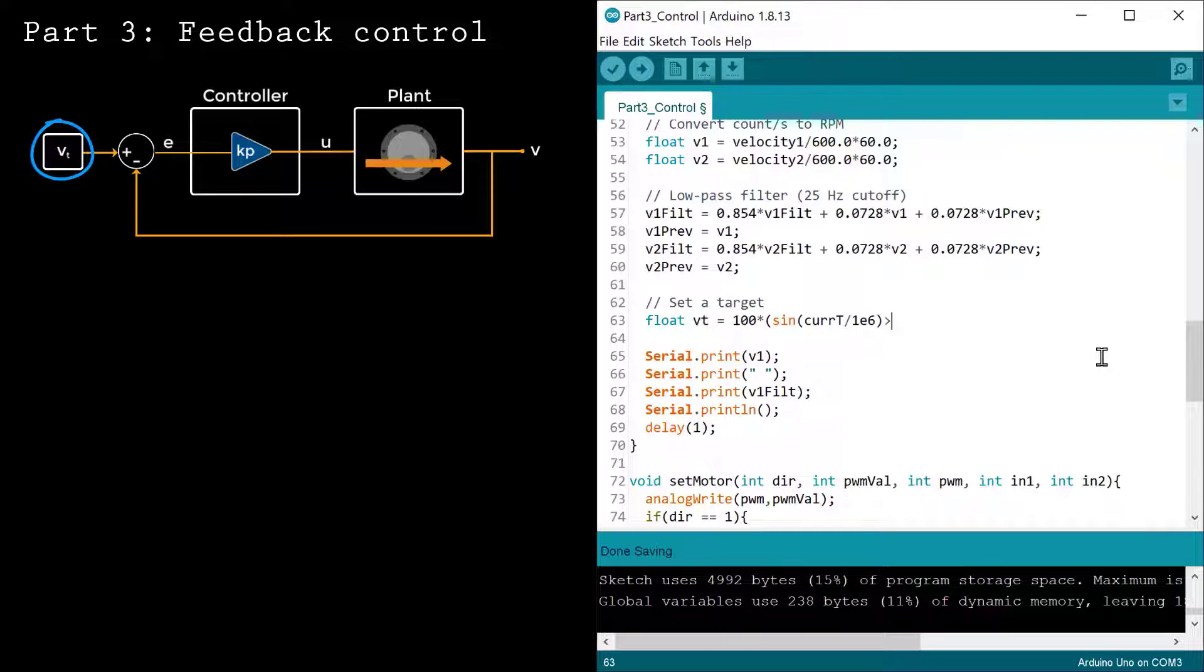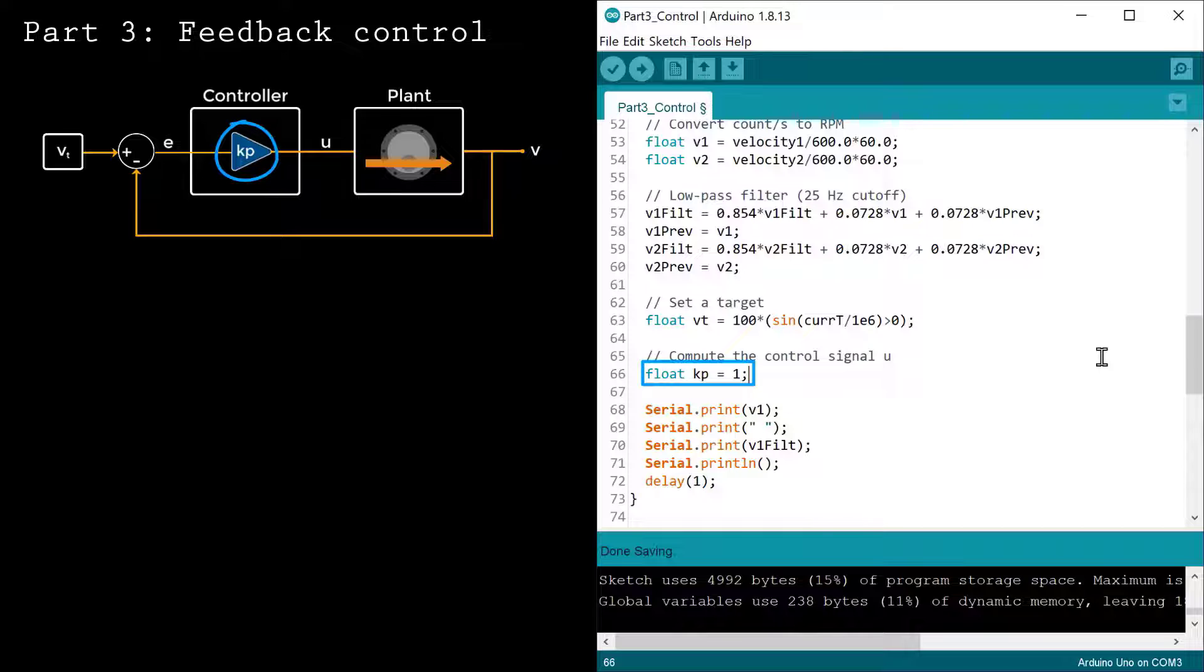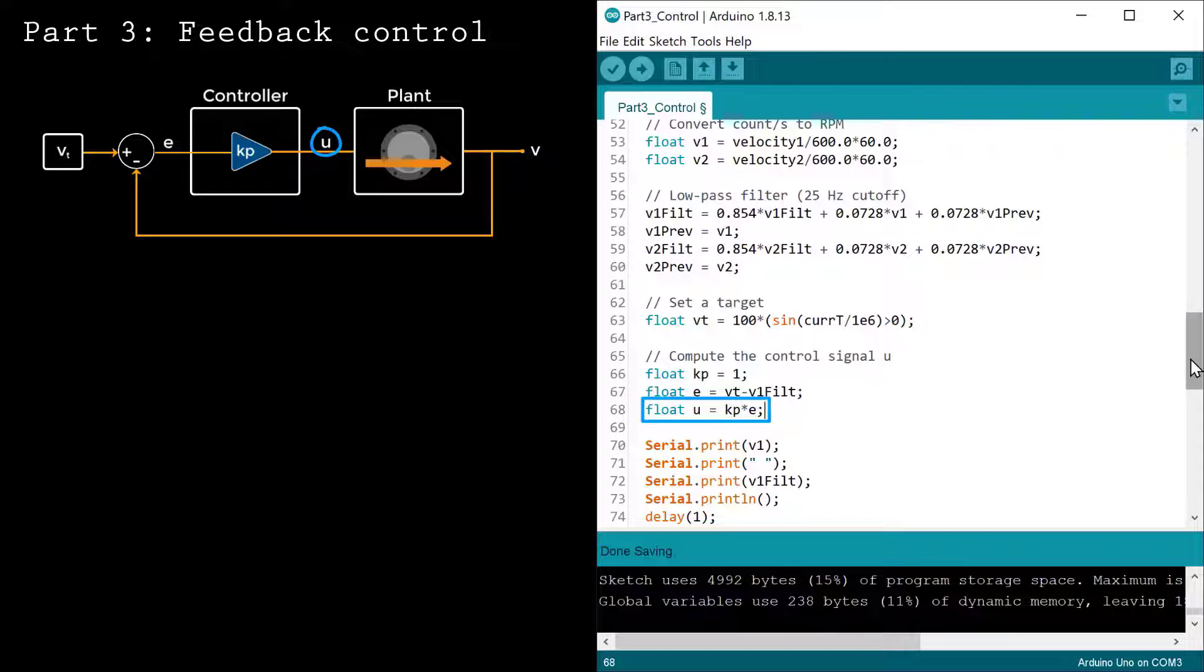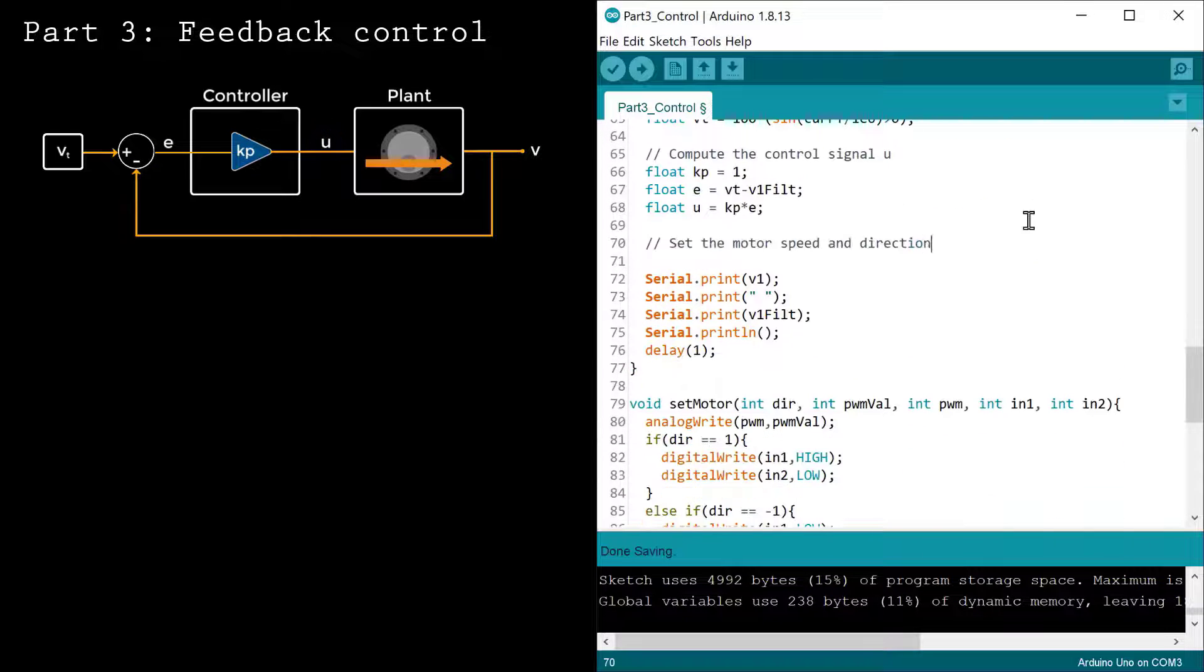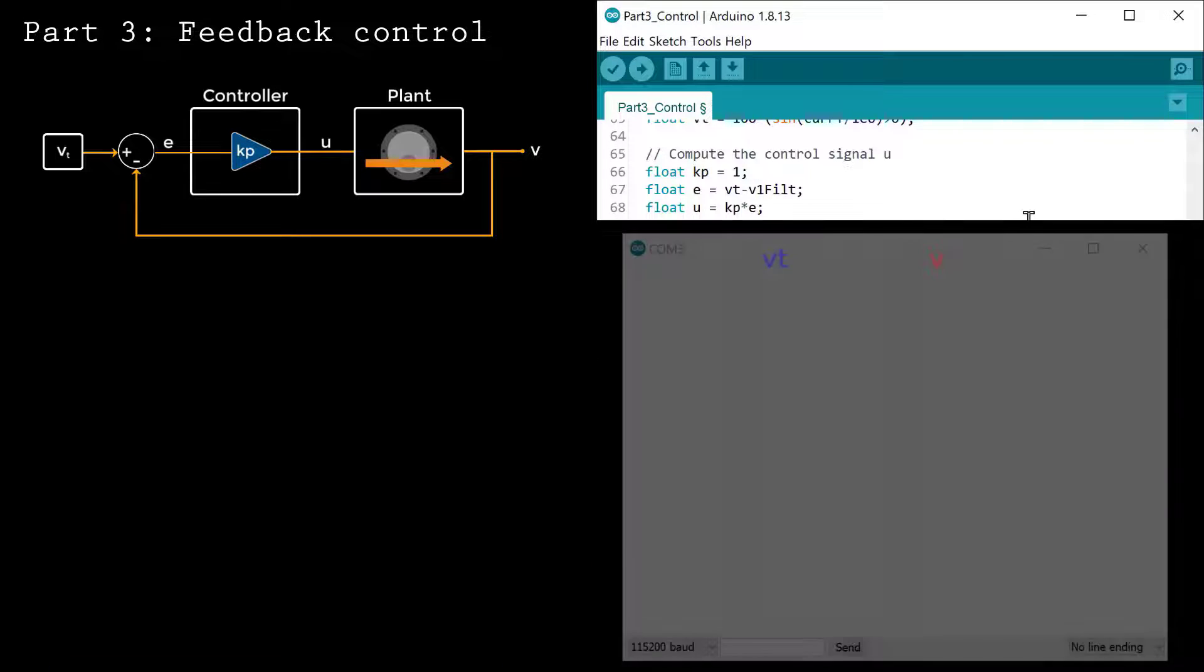Let's implement the proportional controller on the Arduino. First, define a target speed. Define Kp and set it to 1 for now. We'll adjust it later. Compute the error as the difference between the target and filtered velocity. The control signal U is simply the error multiplied by Kp. We can compute the direction that the motor spins as the sign of U. We can't actually specify the voltage across the motor leads directly. Instead, we'll specify the PWM value applied to the motor driver as the magnitude of the control signal U.